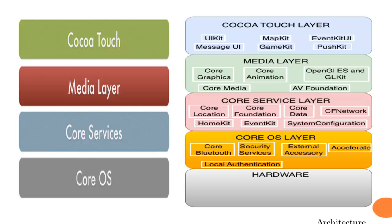The technologies in CoreOS include Core Bluetooth, which provides services related to Bluetooth. Second is Security Services, which provides services related to the security of your application. Third is External Accessory, which allows your system to attach to external hardware devices. Next is Accelerate, which increases the speed of your application. And last is Local Authentication, which allows authenticated users to log in to your system and access applications.